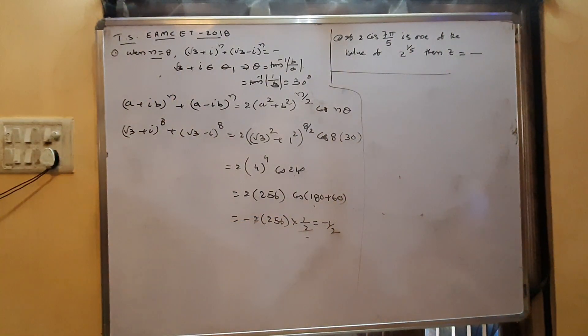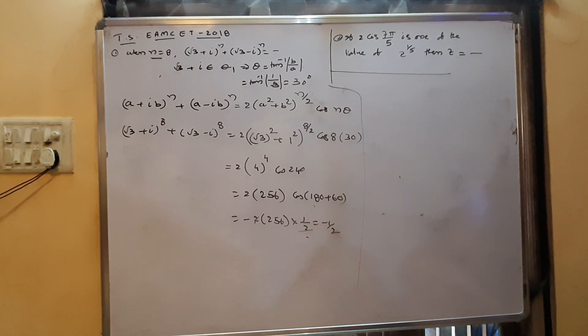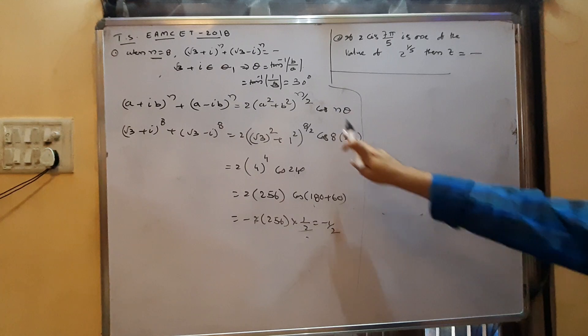In short: when minus is given between, we use 2i·(a²+b²)^(n/2)·sin(nθ) with the same formula to get the answer.